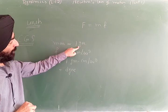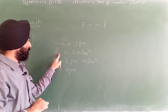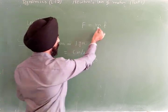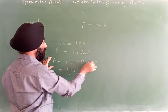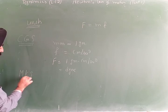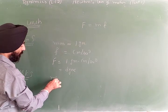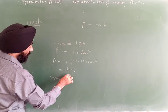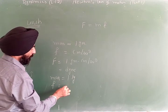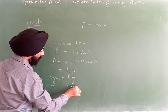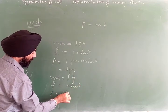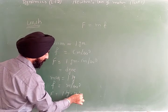In the CGS system: mass is in grams, acceleration is in centimeters per second squared, and force equals mass into acceleration, giving 1 gram centimeter per second squared, which is 1 dyne.